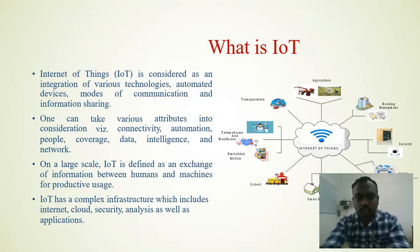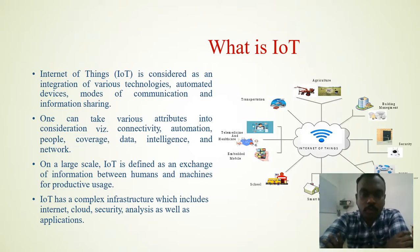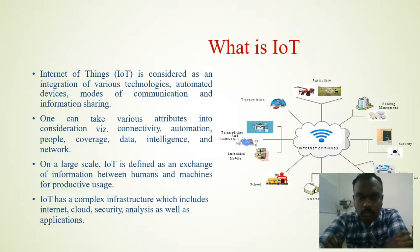First, we need to understand what IoT means and who introduced it. The scientist's name is Kevin Ashton. The idea of connected devices has actually been around since the 1970s, and back then it was often called embedded internet or pervasive computing.